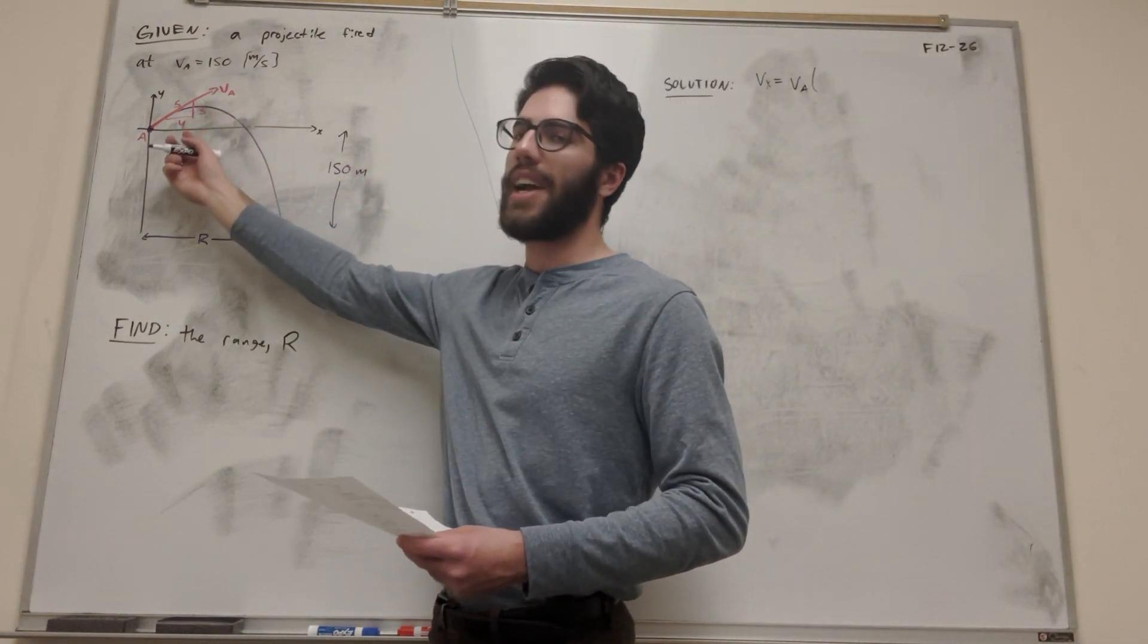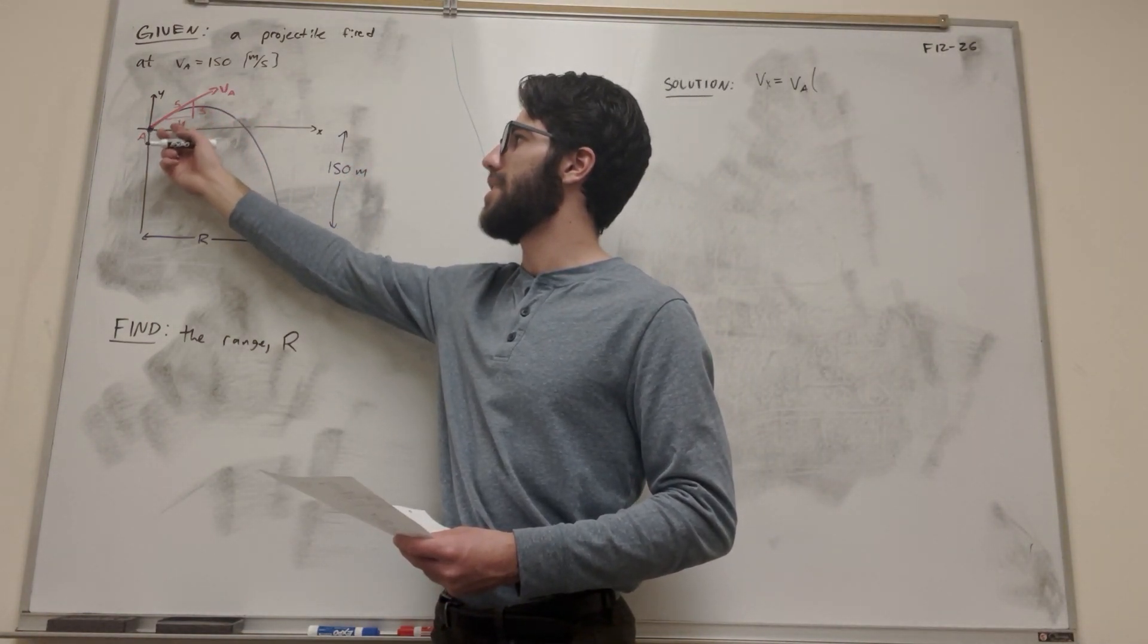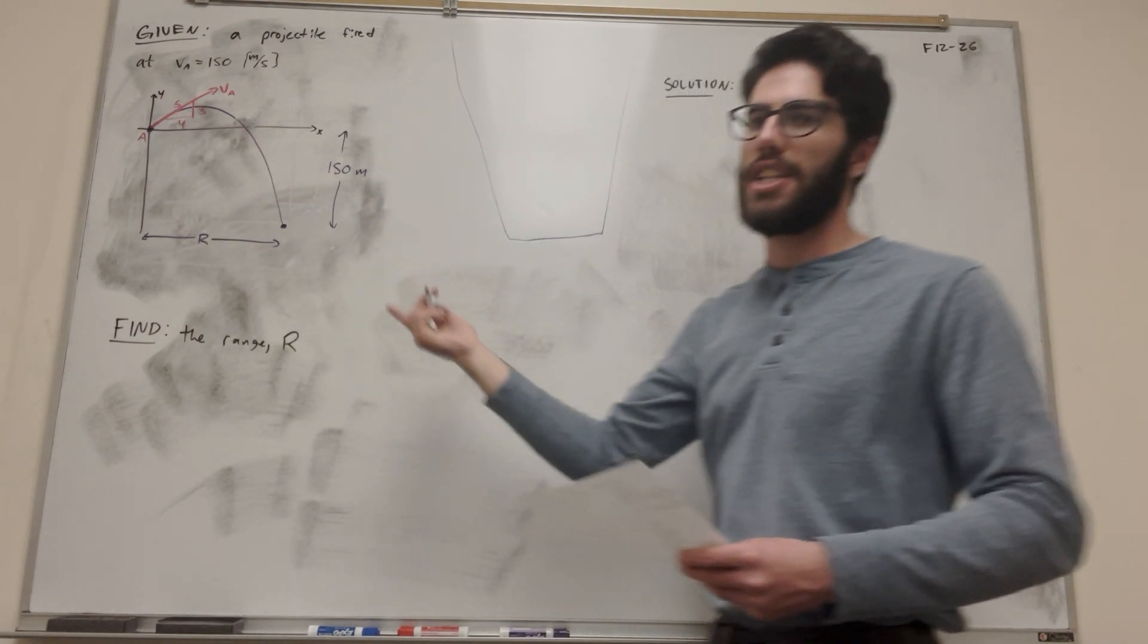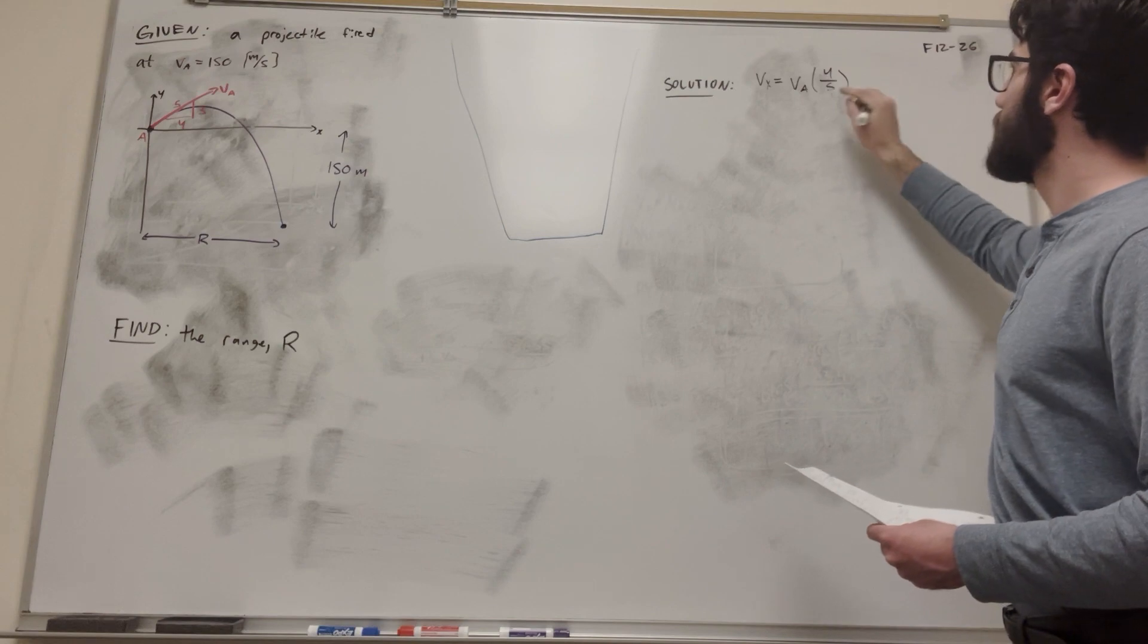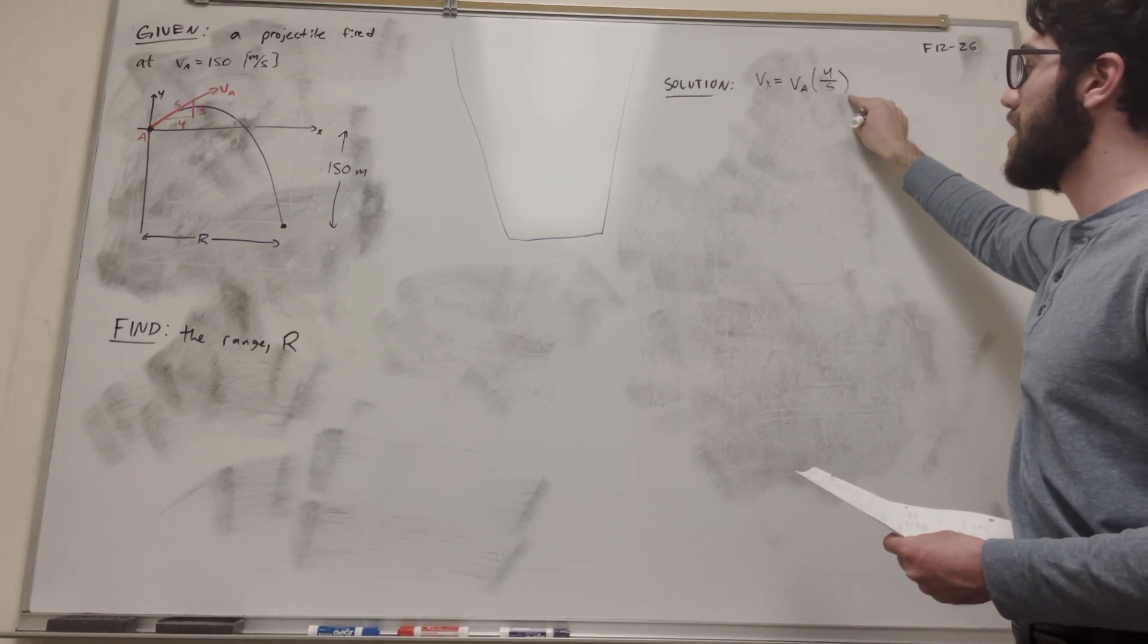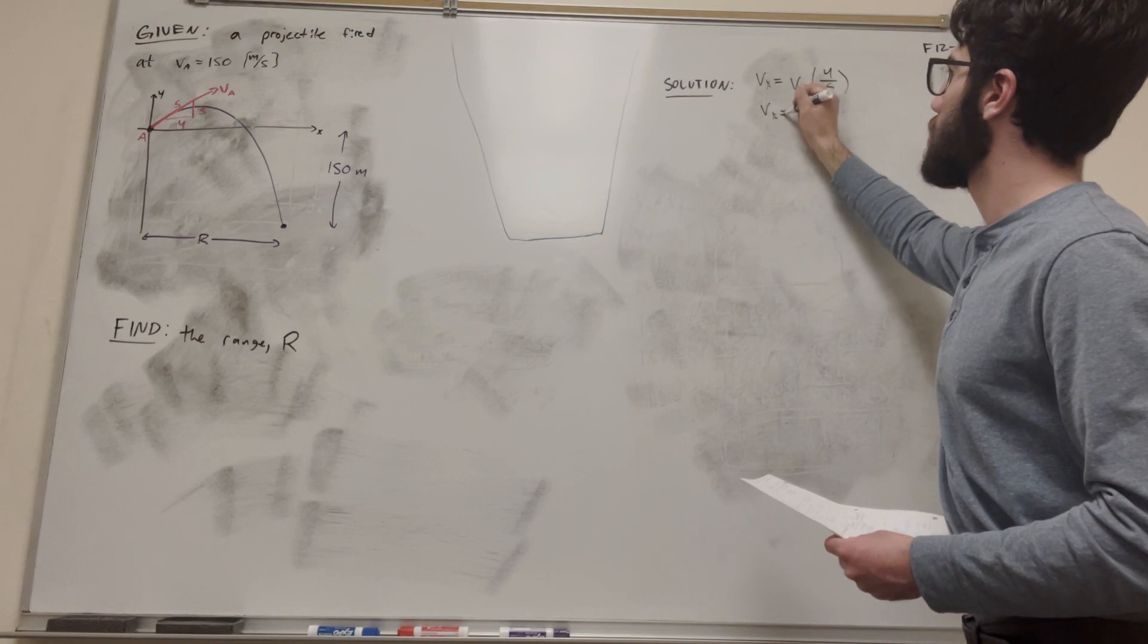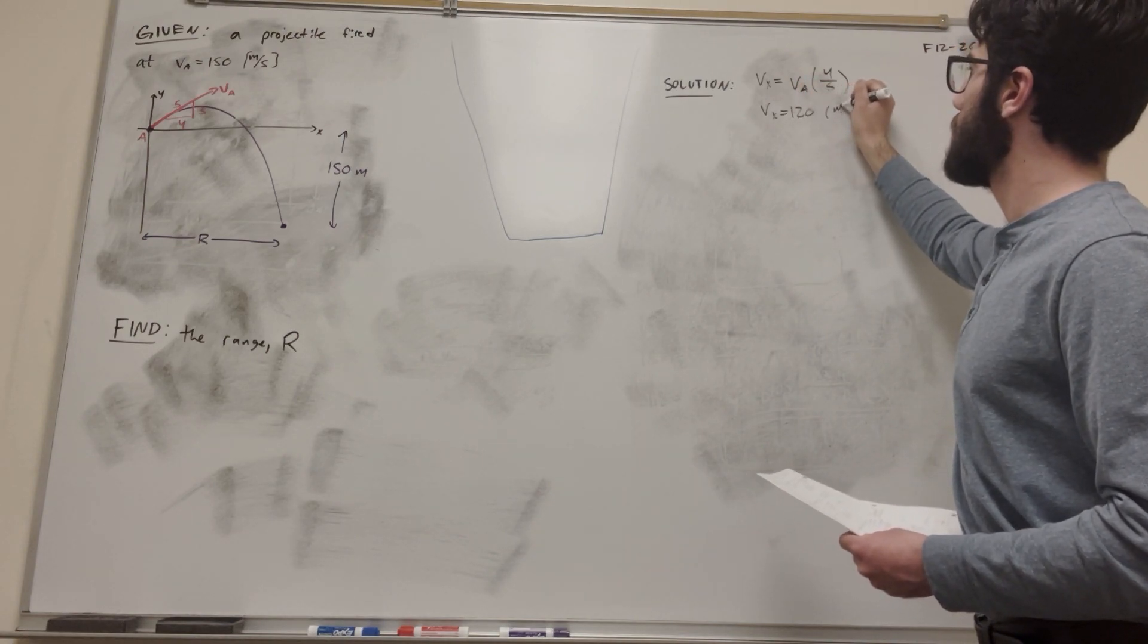So we're doing that as a 3-4-5 triangle, and the x component of this is the 4 side. So if we want to find just the x side, we're going to take 4 fifths of that. So vA is 150, 4 fifths of 150 is 120, and then meters per second.